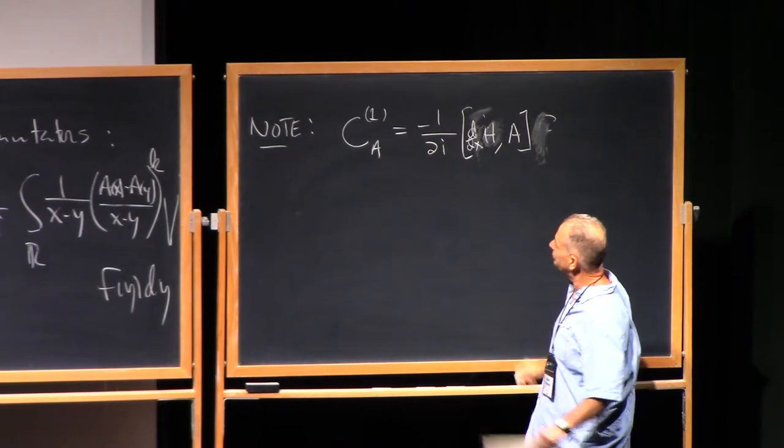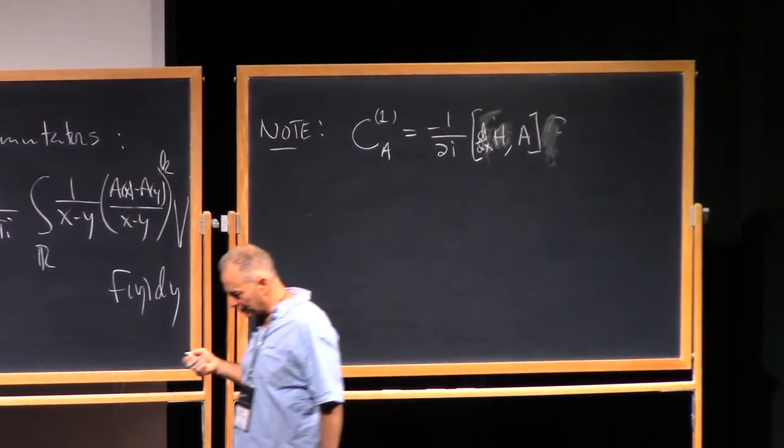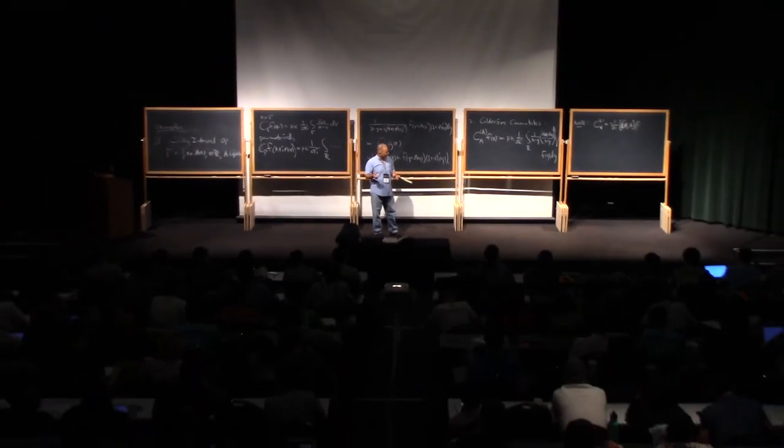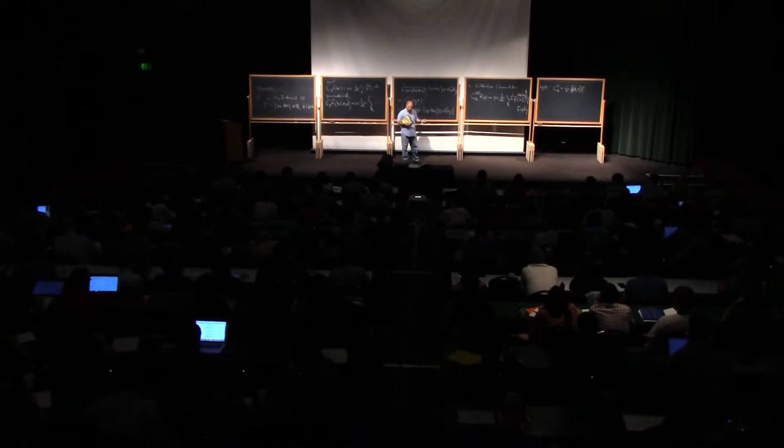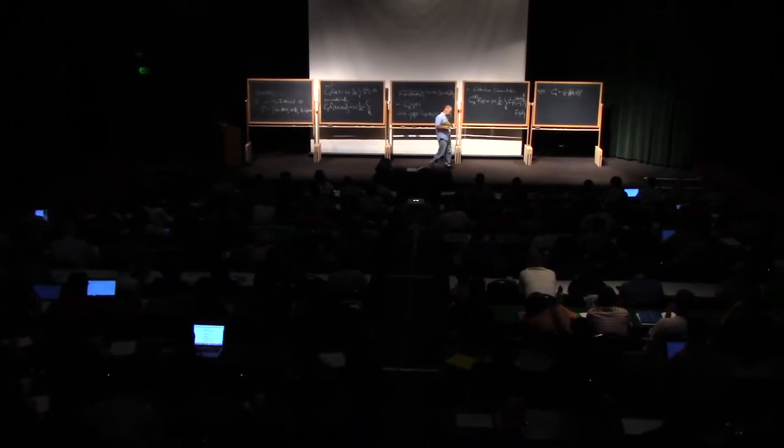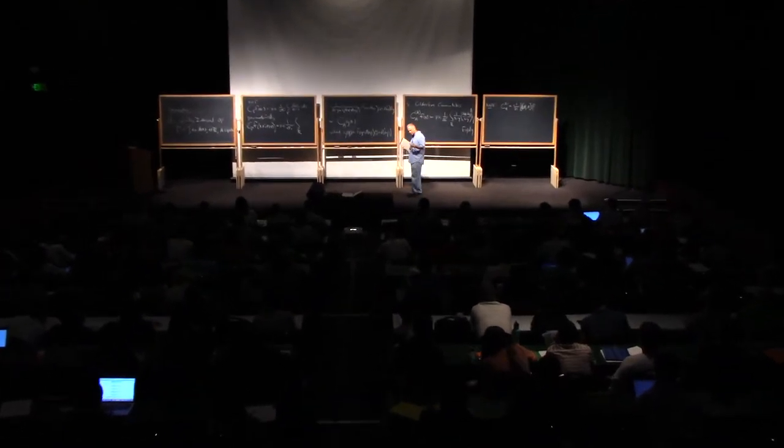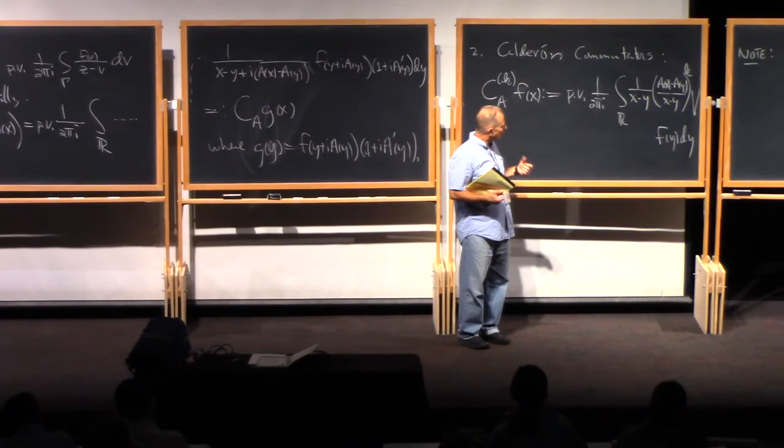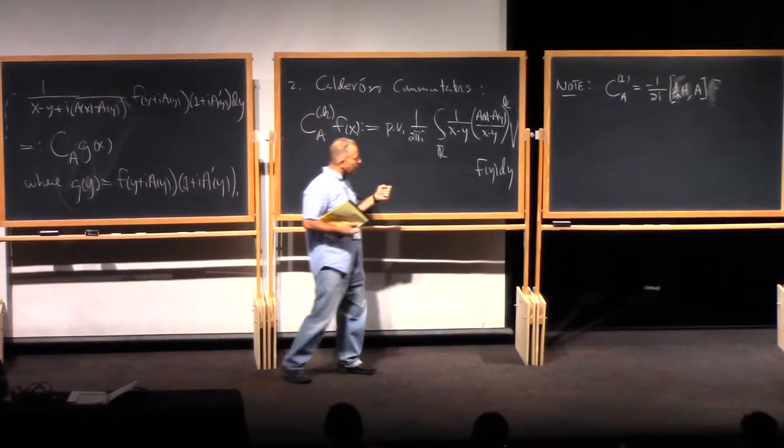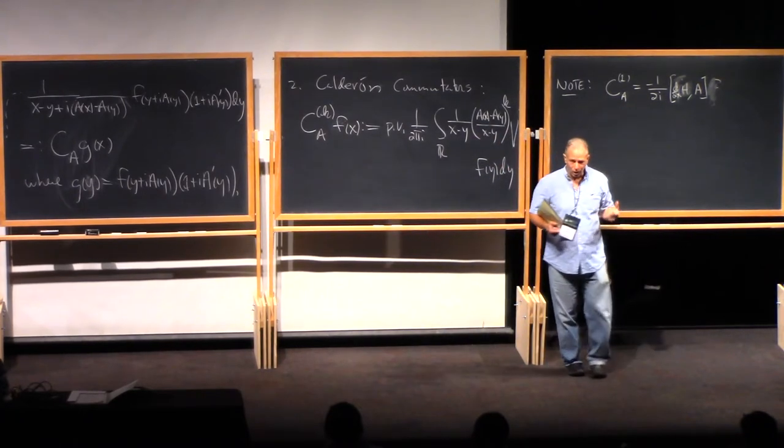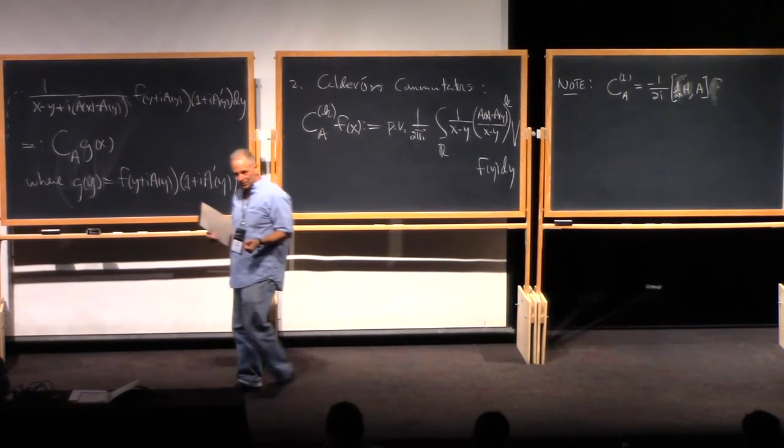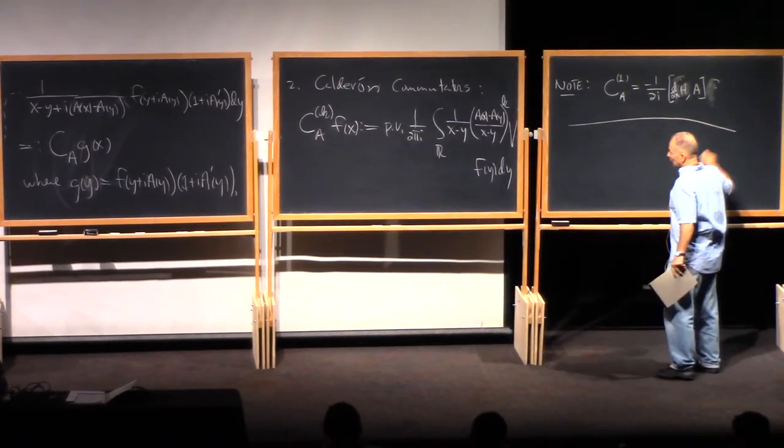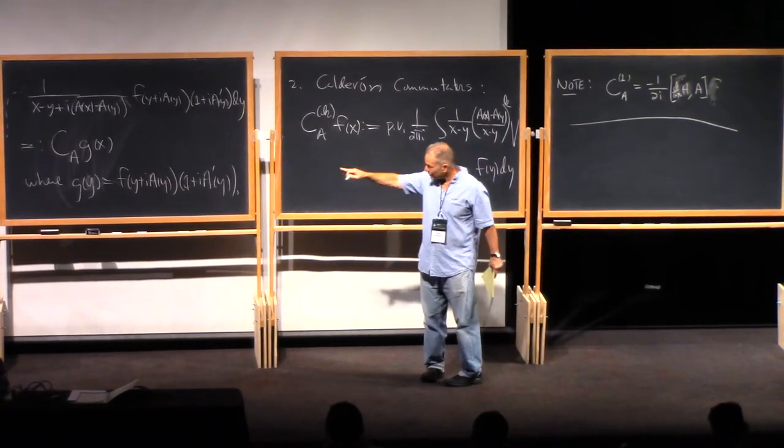Calderon was interested in this particular object because it was the fundamental building block for his work on building algebras of singular integral operators to build a pseudo-differential calculus to treat partial differential operators that had minimally smooth coefficients, say Lipschitz coefficients. The standard pseudo-differential calculus treats C-infinity coefficients, but Calderon was able to build a sort of pseudo-differential calculus to treat the case of minimally smooth coefficients, and the L2-boundedness of this guy was the fundamental tool that he needed in order to do that.